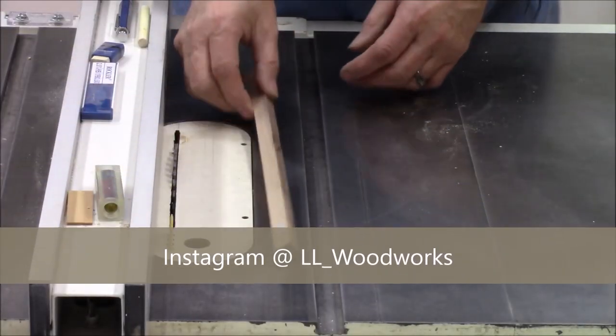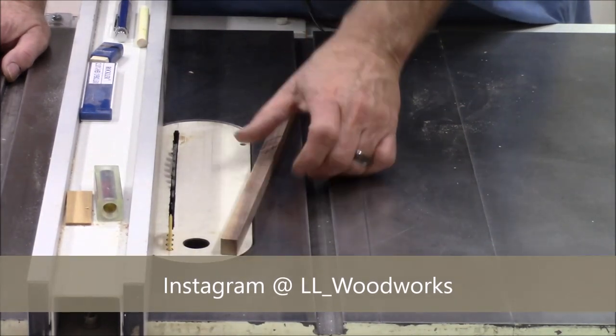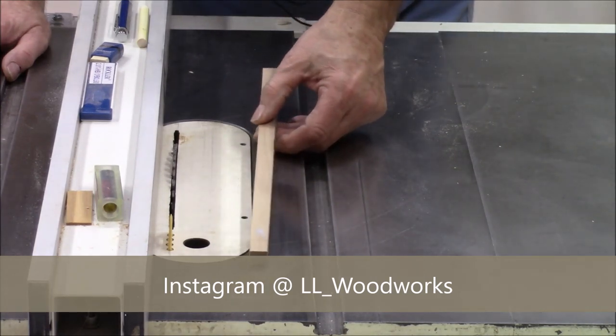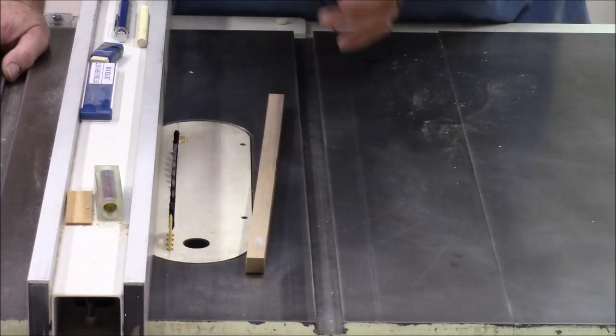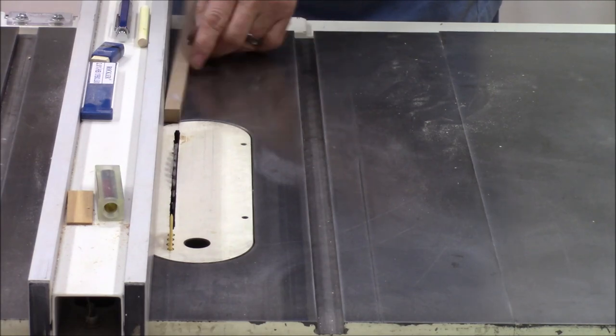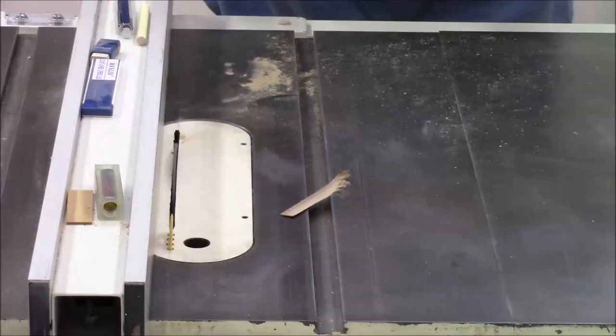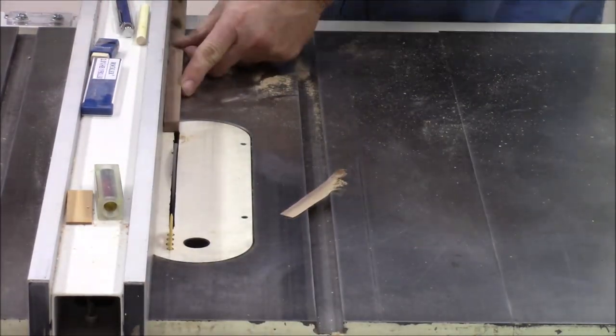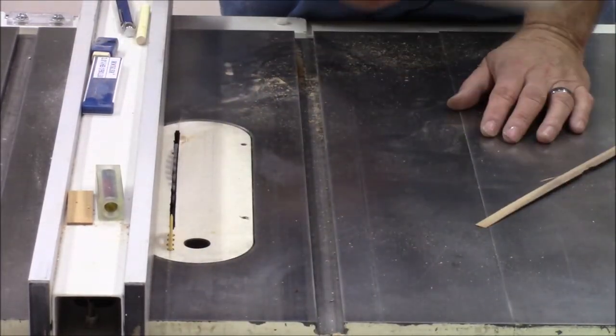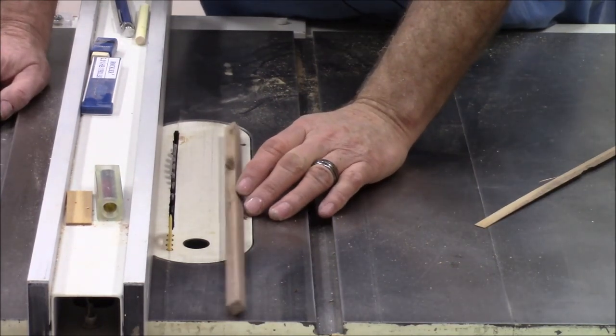I'm starting with a piece of scrap walnut. I like it because it's got a little sapwood and a little heartwood both in it for character. We're going to cut this down to about 3/8 by 3/8. Okay, so we've got a 3/8 by 3/8. Now I'm just going to work on rounding it off.